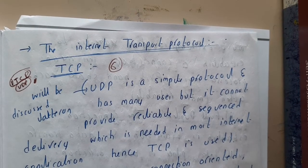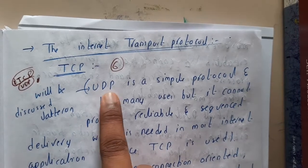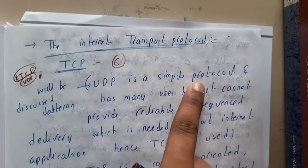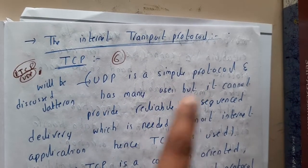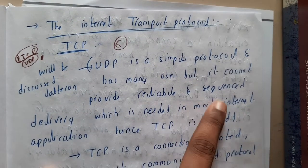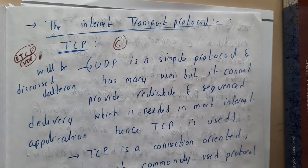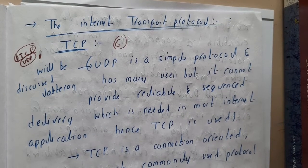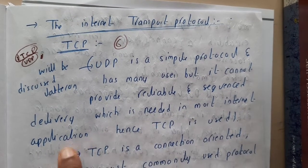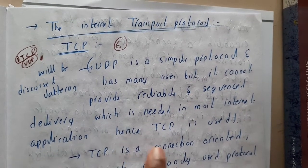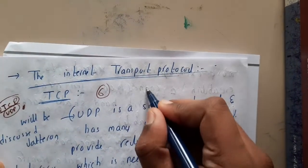UDP is a simple protocol and has many uses, but it cannot provide reliable and sequenced data — sequenced meaning one packet after the other in the exact order — which is needed in most internet applications. Hence, TCP is used.